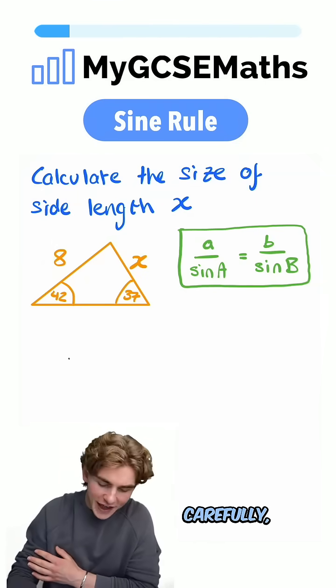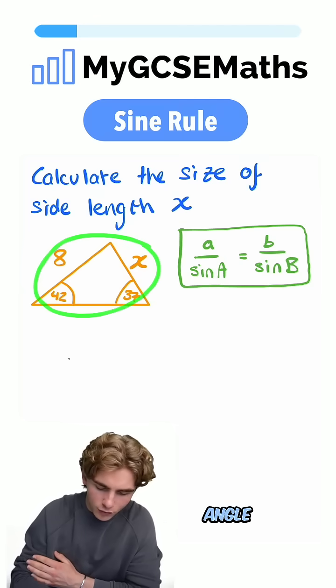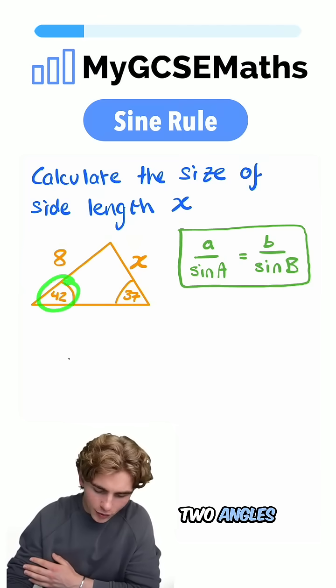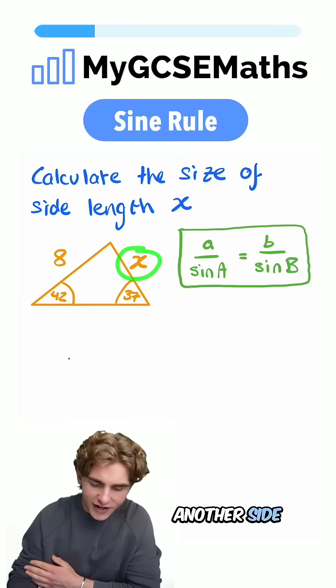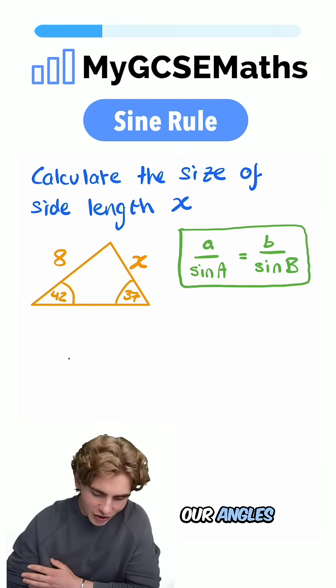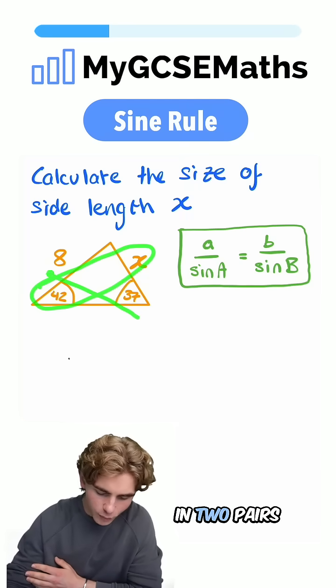What are we going to do? Well, if we look carefully, we can see that this is a non-right angle triangle. We're given two angles and a side length, and we're asked to work out another side length where our angles and our side lengths are in two pairs of opposites.